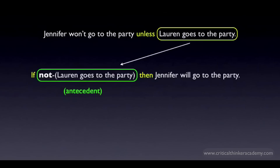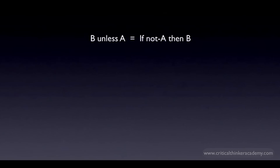Here it is in a way that highlights these two moves: you look for the 'unless,' take what immediately follows, negate it, and make that the antecedent of the conditional. This gives us the form of the general rule — if you say that B is true unless A is true, then you're saying that if A is false, then B is true.